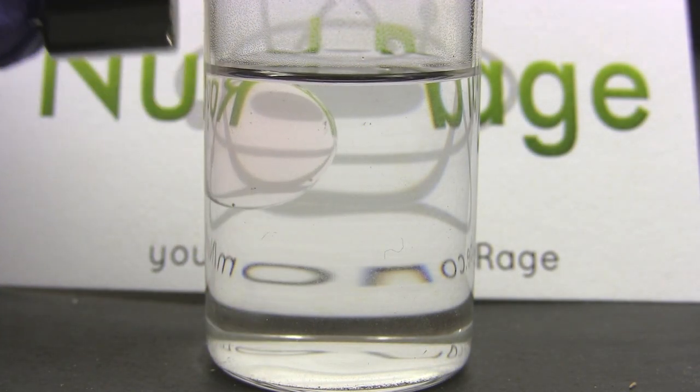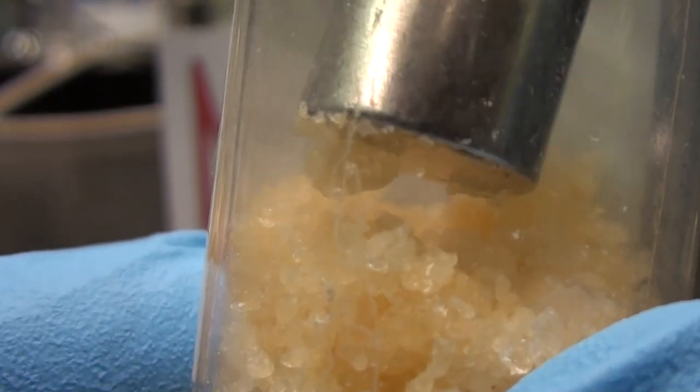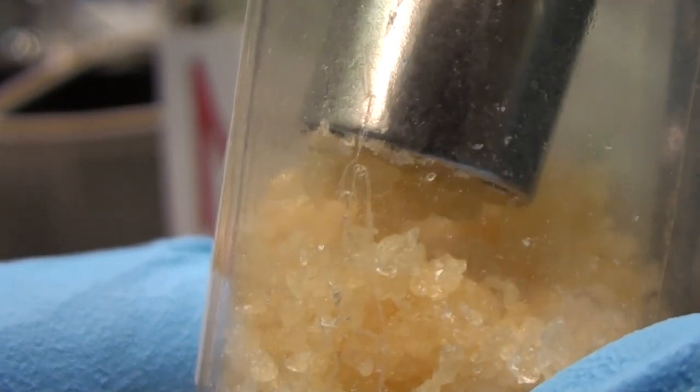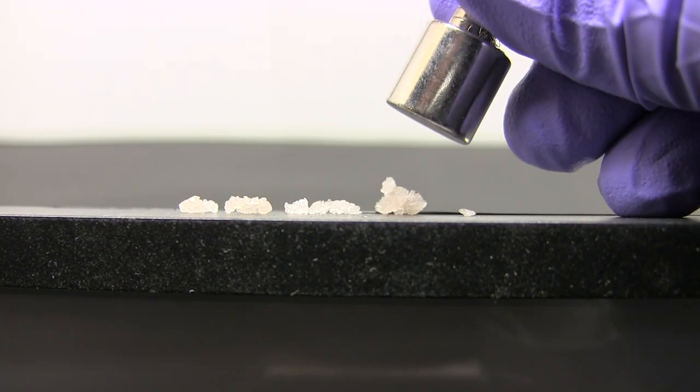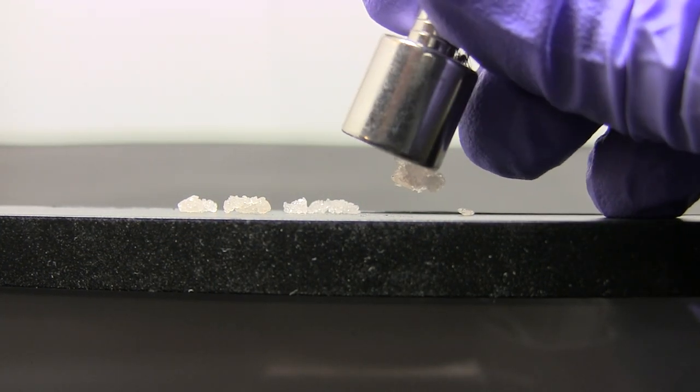First we need a paramagnetic salt. Now I showed in a previous video that dysprosium nitrate was paramagnetic, but there is a cheaper and easier to obtain paramagnetic salt, manganese nitrate. The attraction is very weak but it's there.